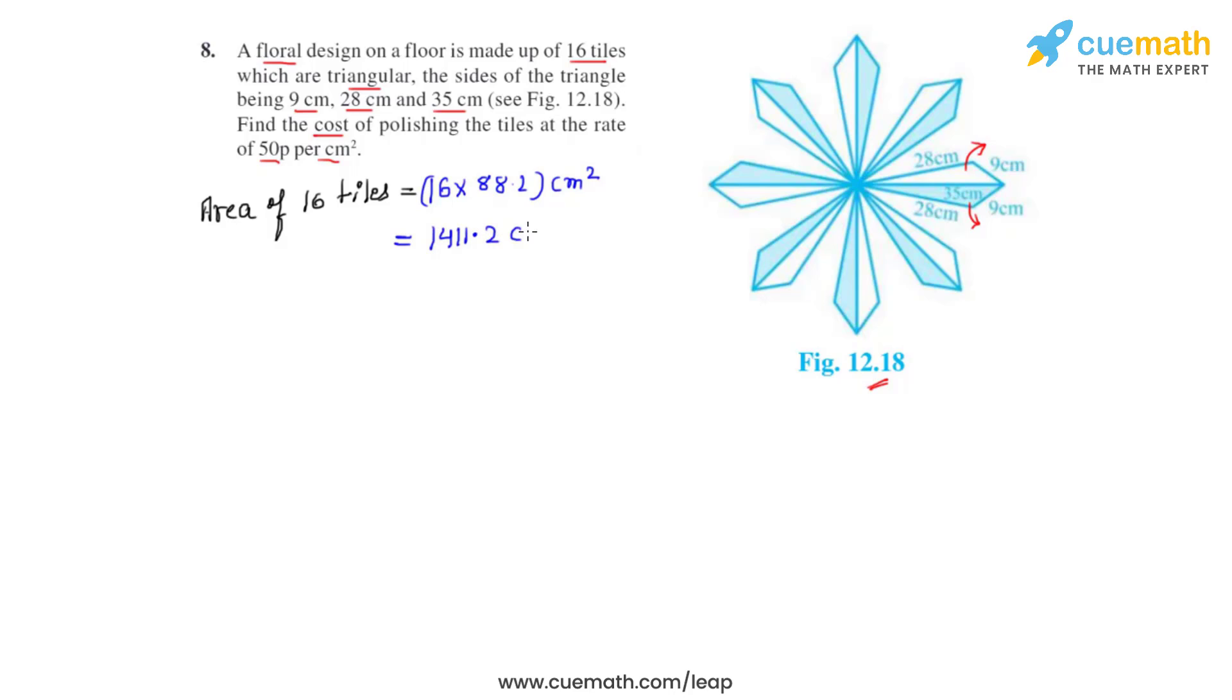So the area of 16 tiles we get as 1411.2 centimeter square. Now that we have found out the area of 16 tiles, from the question we get that the cost of polishing one centimeter square equals 50 paisa, which is nothing but 0.5 rupees.